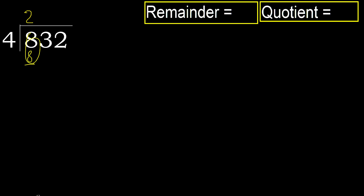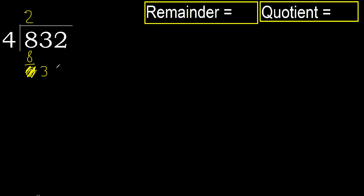8 minus 8 is 0. Next, bring down 0. Then 3 — 3 is less, therefore next. 32. Two numbers, therefore complete. Always complete with 0 when there are 2 numbers.